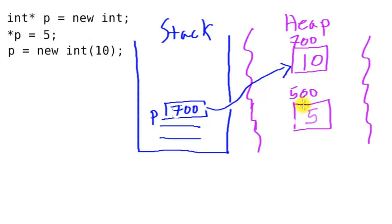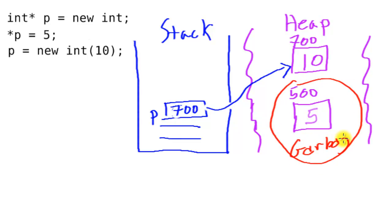Notice that our original int with value 5 at address 500 is still out on the heap, but it's no longer accessible. This is what we call garbage. Garbage is a bad thing, especially in larger programs where we may be allocating a lot of things on the heap. If we continually create garbage, we could run out of heap space, and invoking `new` when there's no heap space left could crash our program.